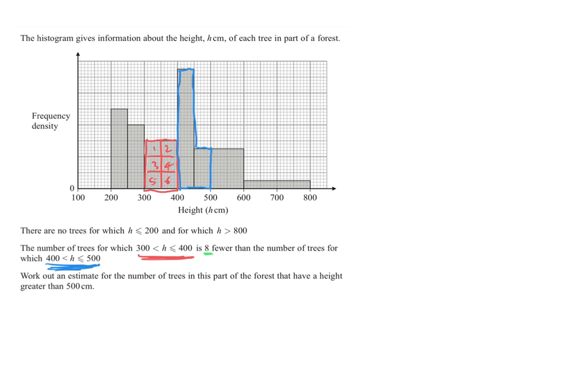Now in the blue section we have 1, 2 whole ones there, 3, 4, 5, 6, 7, 8, 9, plus we have half a square here and half a square here. So that gives us 10 squares in total.